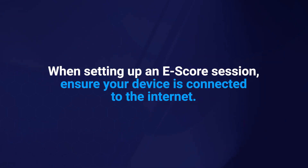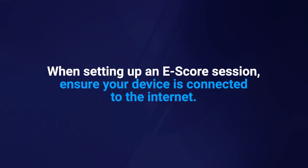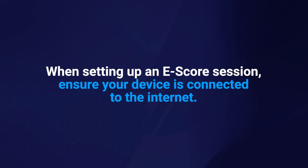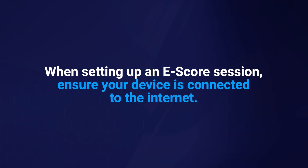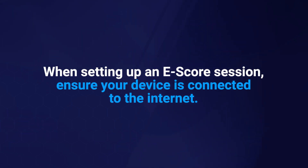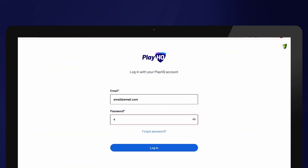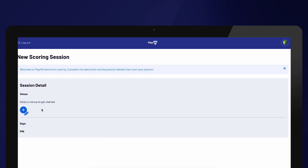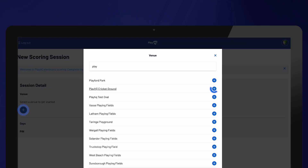When setting up an eScore session, please ensure that your device is connected to the internet. Don't worry if you don't have internet access at the venue itself, as you are able to score offline if required. To begin, log into electronic scoring using your PlayHQ account login details. Next, select the venue and date for the matches being played.